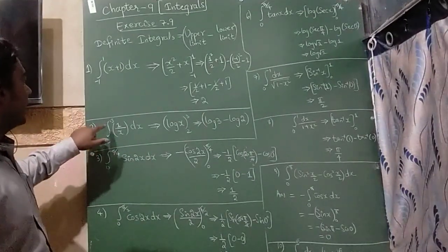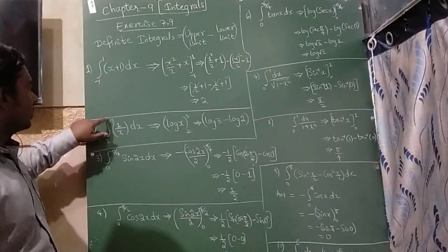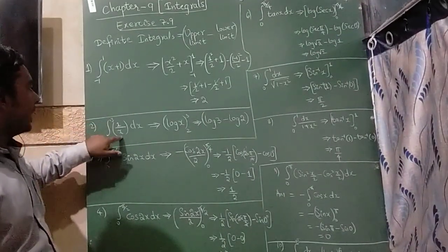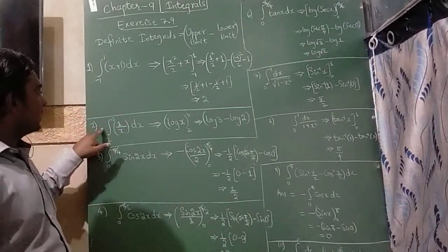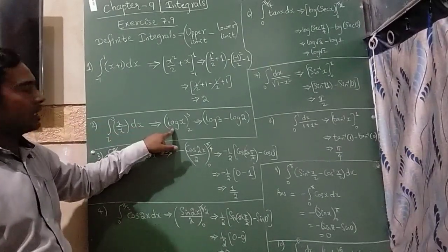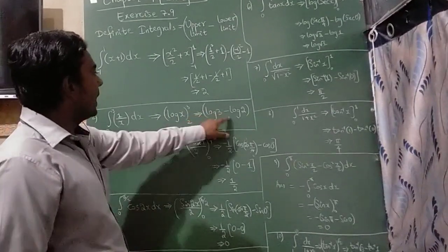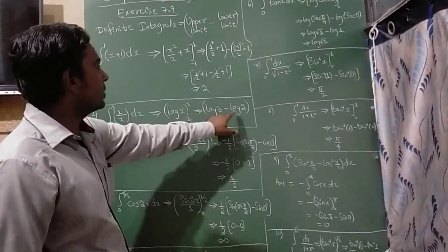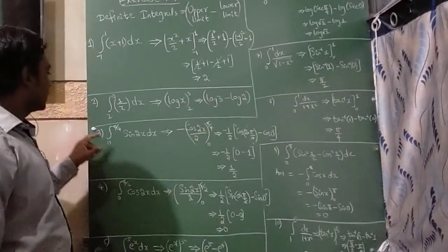The second question is integration of 2 to 3 of (1/x) dx. Integration of 1/x is log x. Applying the upper limit 3 minus lower limit 2, we get log 3 minus log 2.